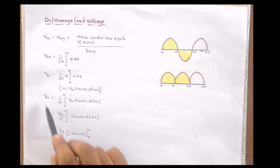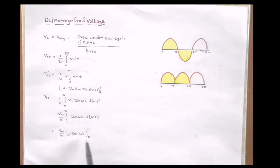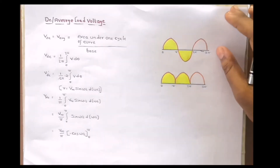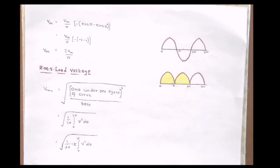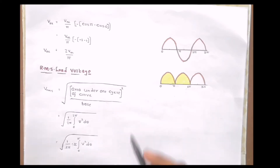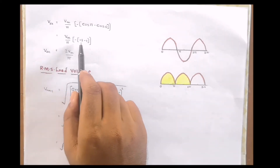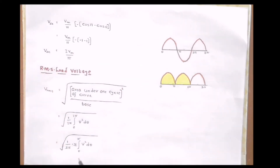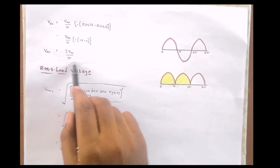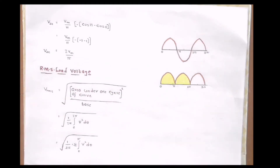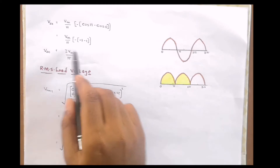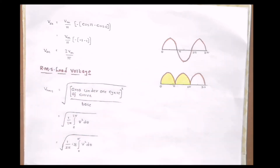So we get Vdc = (Vm/π) × [−cos(ωt)] from 0 to π. Substituting the limits, cos(π) = −1 and cos(0) = 1. Therefore Vdc = (Vm/π) × (−(−1) − (−1)) = (Vm/π) × 2, which gives 2Vm/π. So 2Vm/π is the final expression for the DC or average load voltage of a full wave rectifier.